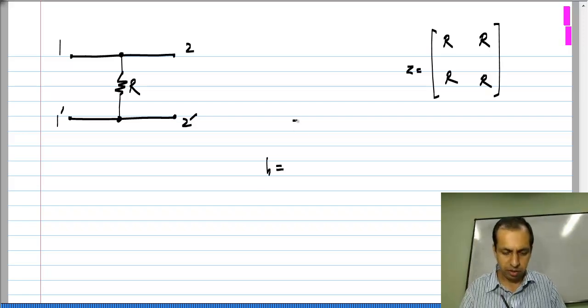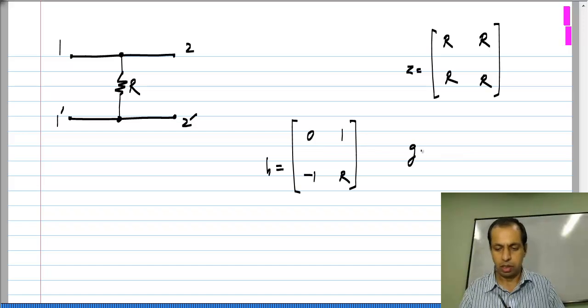The H parameters will be 0, 1, -1, and R. The G parameters will be 1/R, -1, 1, and 0.